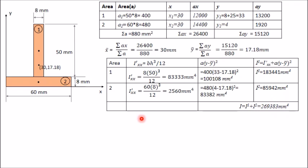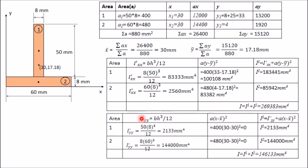Similarly, to find moment of inertia about the centroidal y-axis, we prepare another table. The formula is again bh³/12, where b is the side parallel to the y-axis. For area one, b = 50 and other side = 8, so Ī₁ = 50 × 8³ / 12. For area two, b = 8 and other side = 60, so Ī₂ = 8 × 60³ / 12.